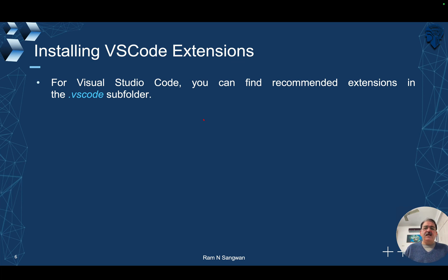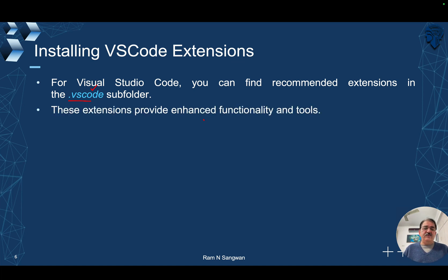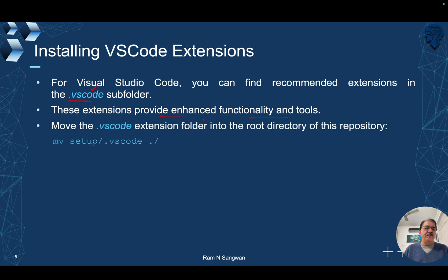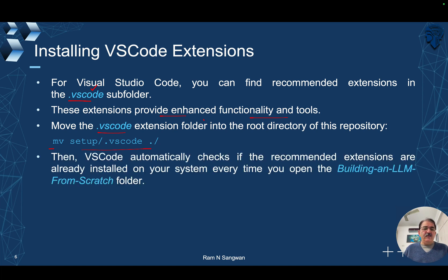For installing extensions, as demonstrated, the .vscode folder contains all required extensions for Visual Studio Code. If they are not already installed, Visual Studio Code will automatically pick them up from this directory. These extensions provide enhanced functionality and tools required for building the large language model. Move the .vscode folder into the root directory, and Visual Studio Code will automatically check if the recommended extensions are already installed every time you open the project folder.